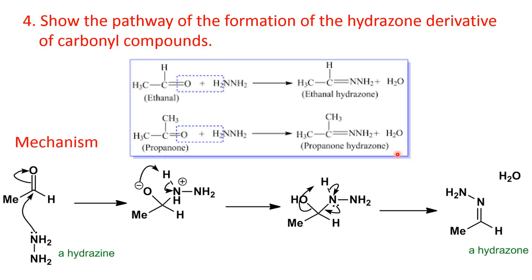Now let's see the mechanism. In hydrazine, the nitrogen atom has a lone pair of electrons. Through this lone pair, it attacks the carbonyl carbon atom — a nucleophilic attack — and the pi bond between carbon and oxygen shifts to oxygen. As a result, the oxygen atom gets a negative charge and a positive charge develops on the nitrogen atom of the hydrazine molecule.